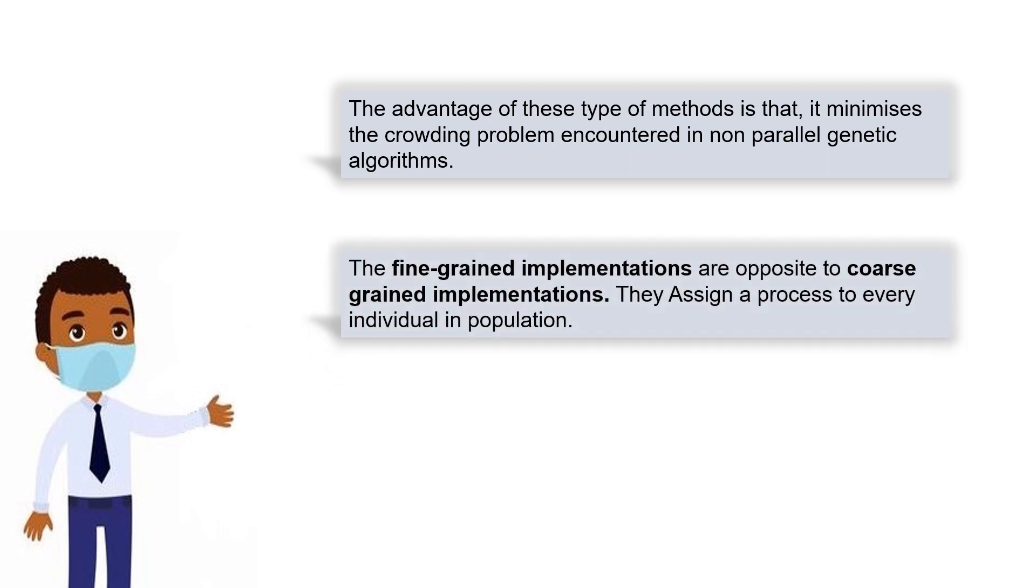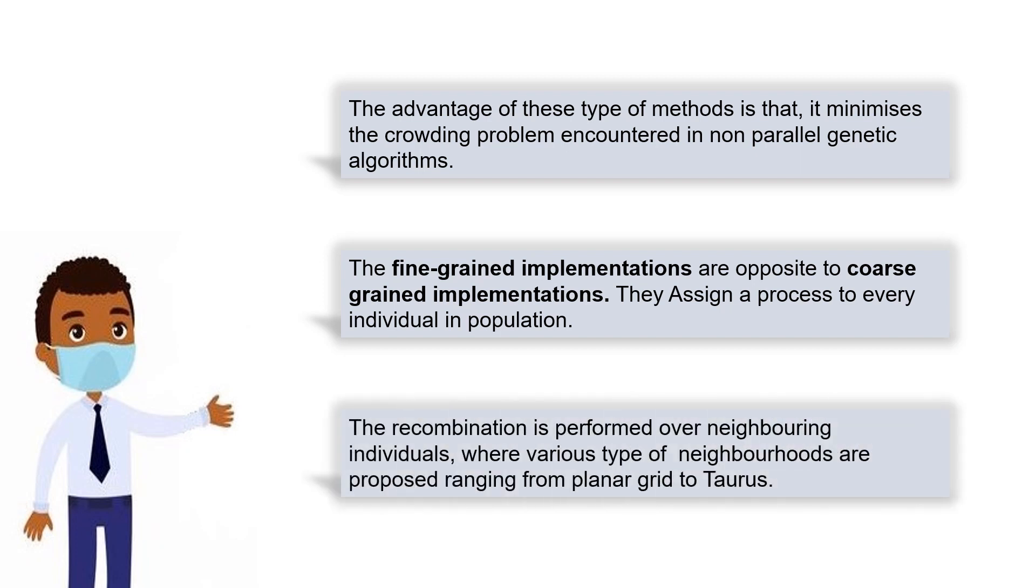The fine-grained implementations are opposite to coarse-grained implementations. They assign a process to every individual in the population. The recombination is performed over neighboring individuals, where various types of neighborhoods are proposed ranging from planar grid to torus.